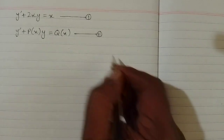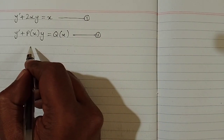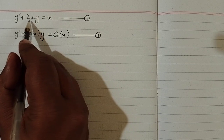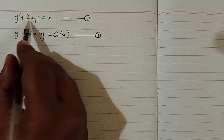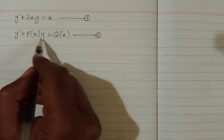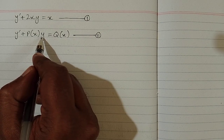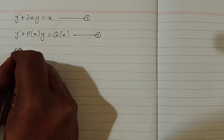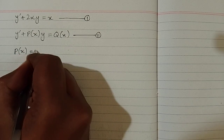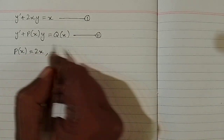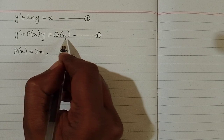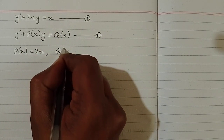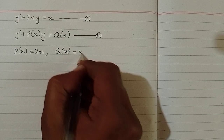Now we can compare equation 1 and equation 2. The coefficient of y in the given differential equation is 2x, and in the standard linear differential equation the coefficient of y is p(x). So p(x) = 2x. On the right-hand side we have q(x), and in the given equation we have x, so q(x) = x.